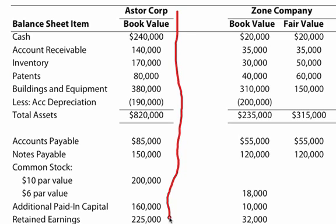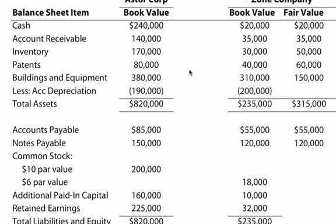Here you have Aster's balance sheet items and their book value, and for Zone Company you have both the fair value and the book value. For this we're mostly going to use fair value, because that's how you do the accounting for this type of problem.